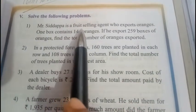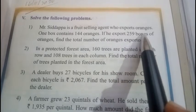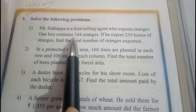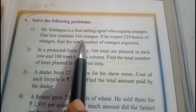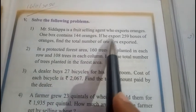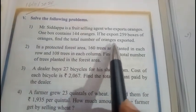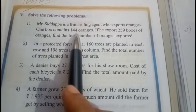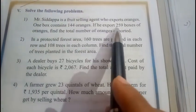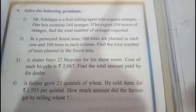It says Mr. Siddappa is a fruit selling agent who exports oranges. One box contains 144 oranges. If he exports 259 boxes of oranges, find the total number of oranges exported. So in one box, 144 oranges are there. He is exporting totally 259 boxes, so how many oranges are there? We need to calculate.